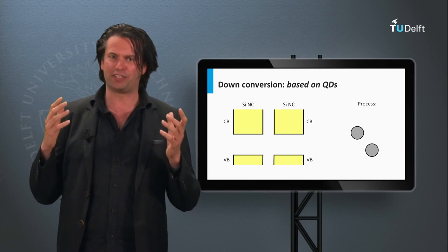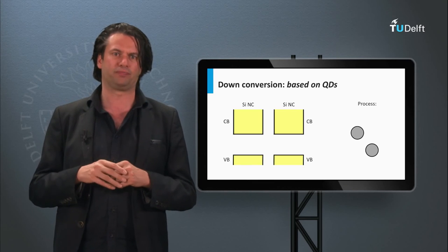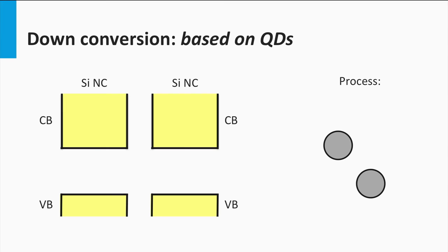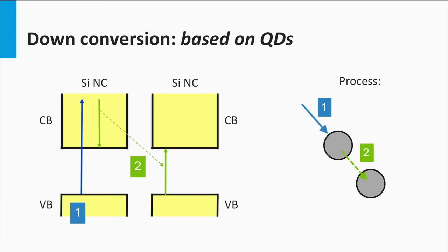How can the properties of an ensemble of nanoparticles be used for down conversion? Here we see the electronic bandgap diagram of two nanoparticles. The particles are at a very close distance from each other, in the order of a nanometer. In one particle an electron is excited into the conduction band. It appears that in such nanoparticle systems, the quantized rest energy is not necessarily lost as heat to the lattice, but can be transferred as a quantized energy package to a neighboring quantum dot. Here a second electron is excited into the conduction band of the second quantum dot, and we have generated two electron-hole pairs out of one photon.